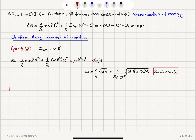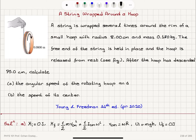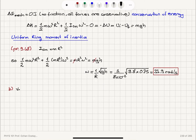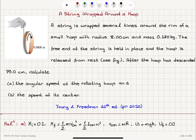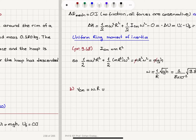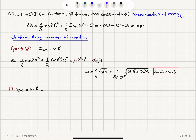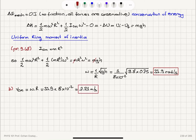Part B asks for the speed of the center. The center of mass has a speed equal to omega times r, because this is a rolling-without-slipping type problem — the hoop rotates and unwraps continuously without slipping. So v_cm equals 33.9 multiplied by 8×10⁻² meters, giving 2.71 meters per second as the final speed of the center of mass.